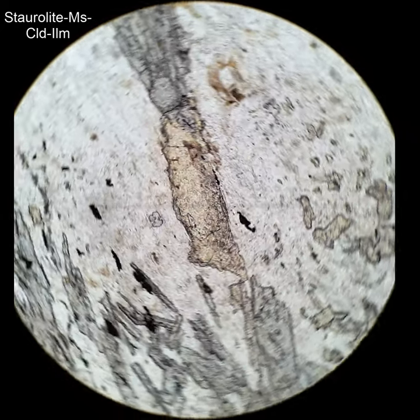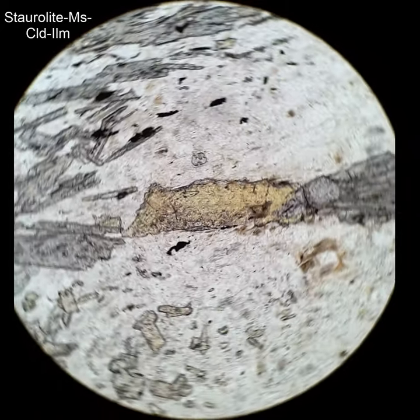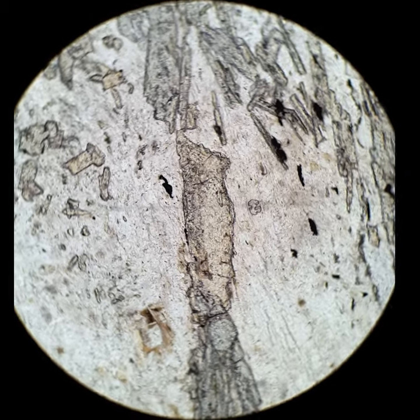This video compares staurolite with chloritoid. Staurolite is the yellow pleochroic mineral in the middle, and chloritoid is the blue pleochroic mineral around the outside.